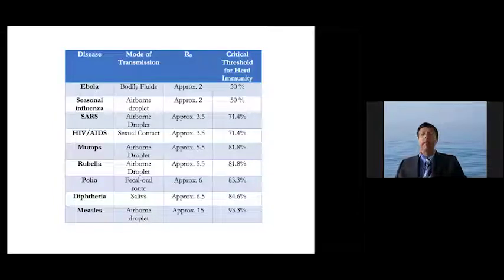Ebola, seasonal influenza has an R0 of approximately 2. So 50 percent of the population being immune would reach the herd immunity threshold. While when it comes to measles, the R0 is very much higher, and a higher number of the population needs to be immune to halt the transmission.